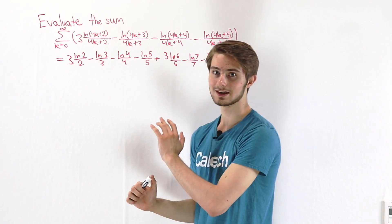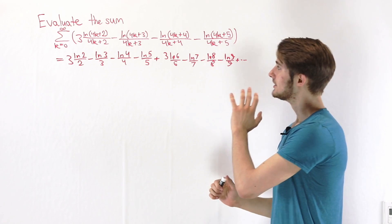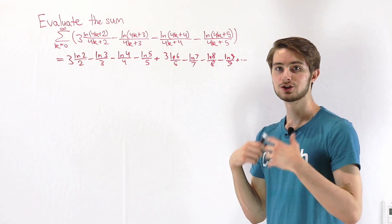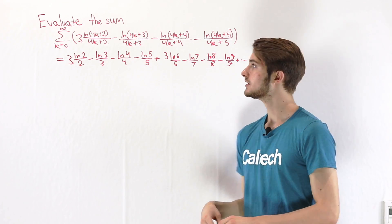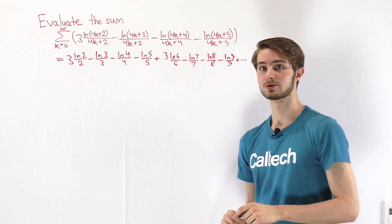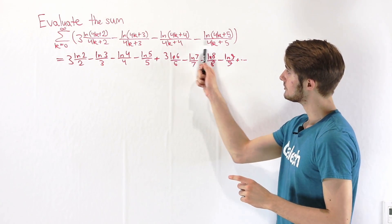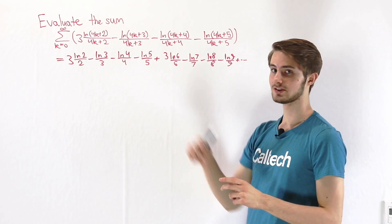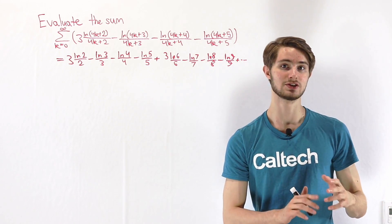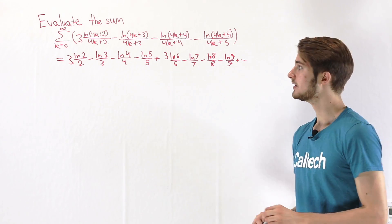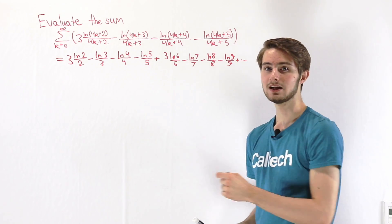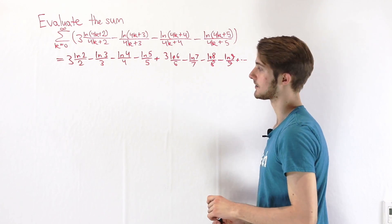When I see this sum, there's not much we can immediately do to evaluate it directly. So instead, what we can do is think about whether the form of this summation reminds us of something easier that we know how to solve. And one thing this reminds me of is a telescoping sum for the natural log.